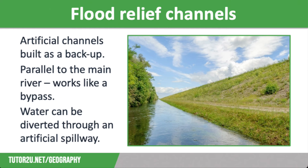Our last method of hard engineering is flood relief channels. If a river frequently floods, it may have an artificial channel built as a backup. The man-made channel is parallel to the main river and works like a bypass. In times of high discharge, a gate will automatically close off the main river and divert water through the artificial spillway to reduce the risk of the main river flooding. The advantages include protecting homes and businesses, reducing insurance premiums, and increasing property values. They are often used as leisure amenities such as cycle paths, and calm water for swimming, paddle boarding, and kayaking. They often have reed beds planted, which provide important wildlife habitats.